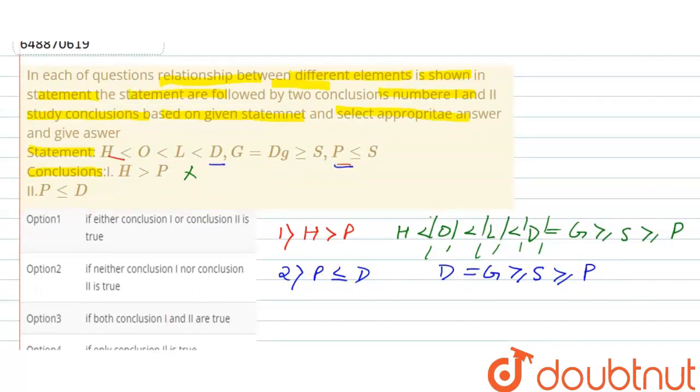Here the greater than sign is in continuous and equal to sign in continuous towards P. That means conclusion second is correct and follows the statement. Here the only one conclusion is correct, that is conclusion second. Now the option check.